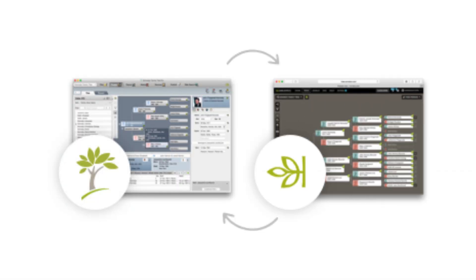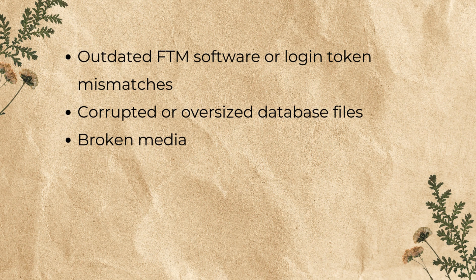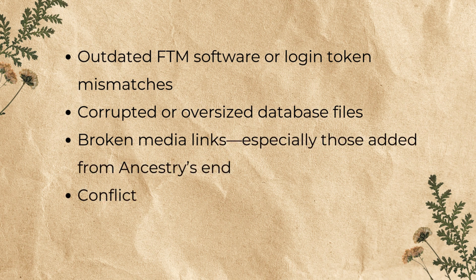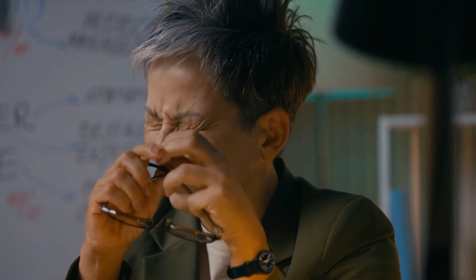But don't worry, these aren't permanent issues and most are totally fixable. So why is this happening? The short version: Family Tree Maker and Ancestry work together, but they're not always perfectly in sync. Some root causes include outdated FTM software or login token mismatches, corrupted or oversized database files, broken media links especially those added from Ancestry's end, conflict between local and cloud data during sync, and sometimes it's just bad timing. Syncing on weekends or right after a big Ancestry update? That's like trying to merge two traffic jams.